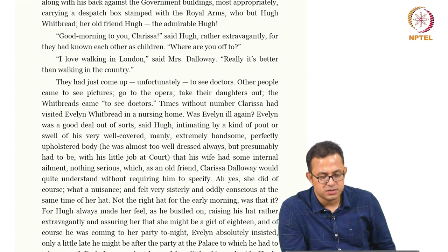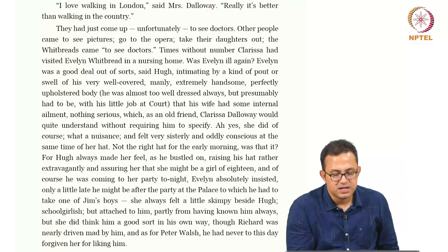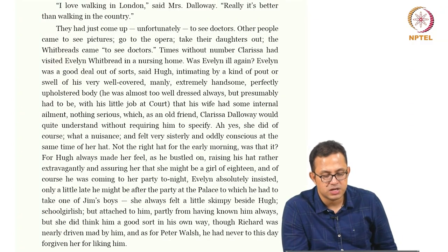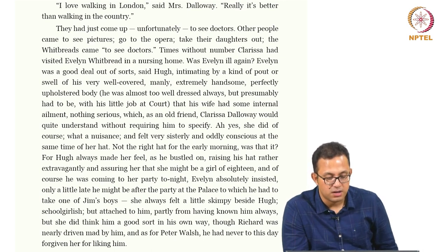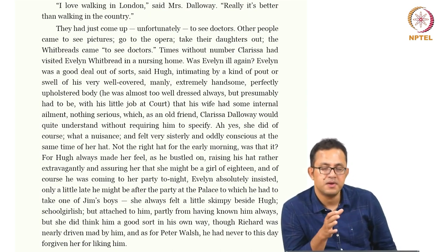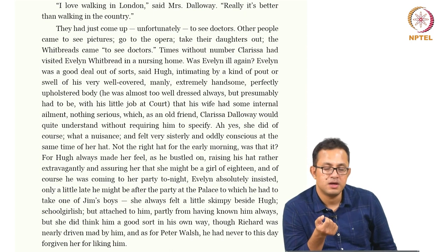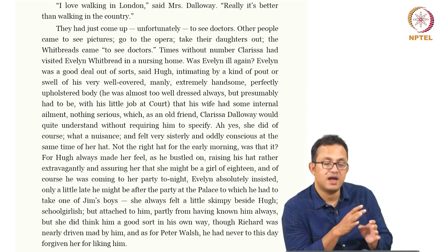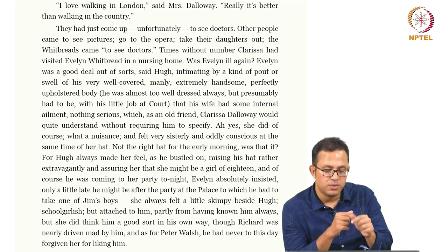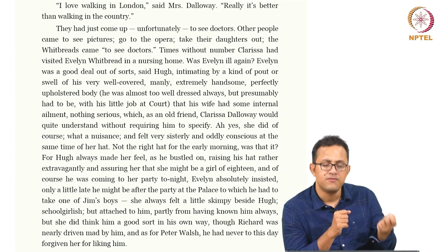'For he always made her feel, as she bustled on, raising his hat rather extravagantly, and assuring her that she might be a girl of eighteen. And of course he was coming to her party tonight.' Hugh Whitbread seems to be this very obnoxious know-all. Peter Walsh, obviously coming back from the colonies, seems to hate him. And we are told that Peter Walsh had never forgiven Clarissa Dalloway for liking Hugh Whitbread. So again we have an array of characters already given to us, and that array is important for us to understand and unpack.